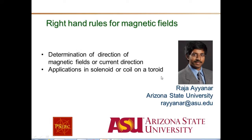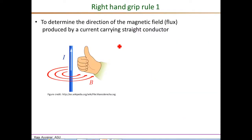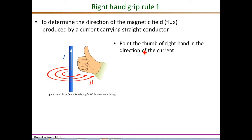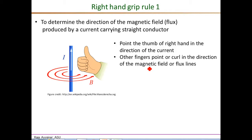The right hand rules are often used to quickly determine the direction of the magnetic field produced by either a straight conductor, a solenoid, or a coil wound on a toroidal core. Let's briefly review the right hand rules to determine the direction of the magnetic field. The right hand grip rule illustrated here lets you determine the direction of the magnetic field if you know the direction of the current. Essentially, point the thumb of the right hand in the direction of the current, then the direction in which the other fingers curl is the direction of the magnetic field or the flux lines.